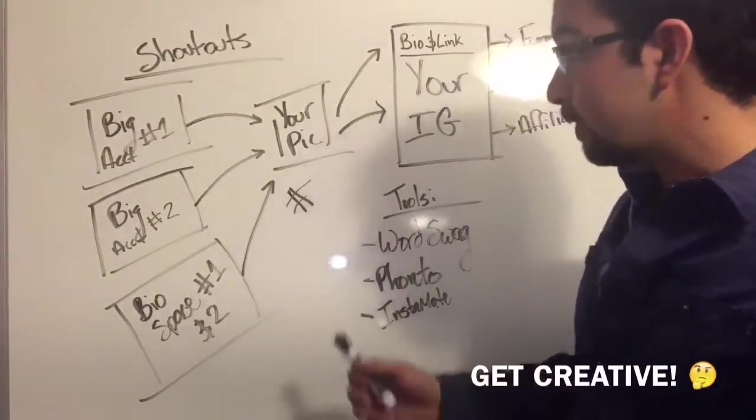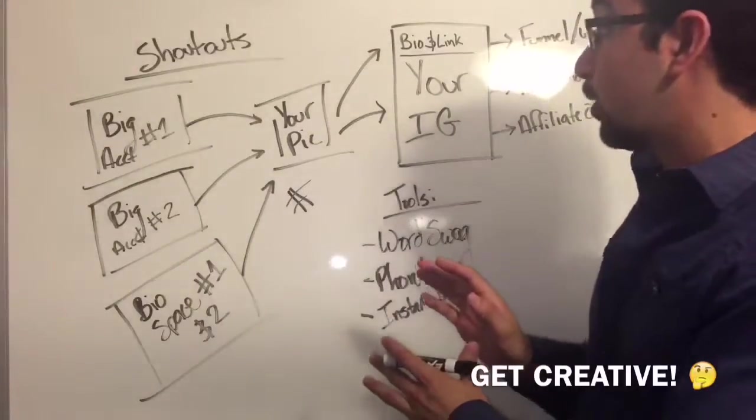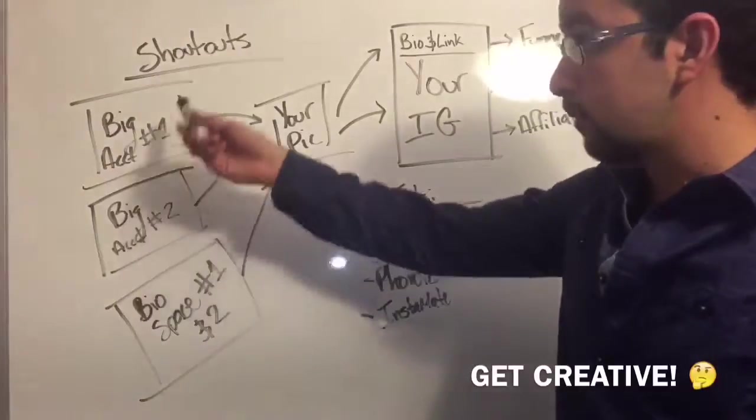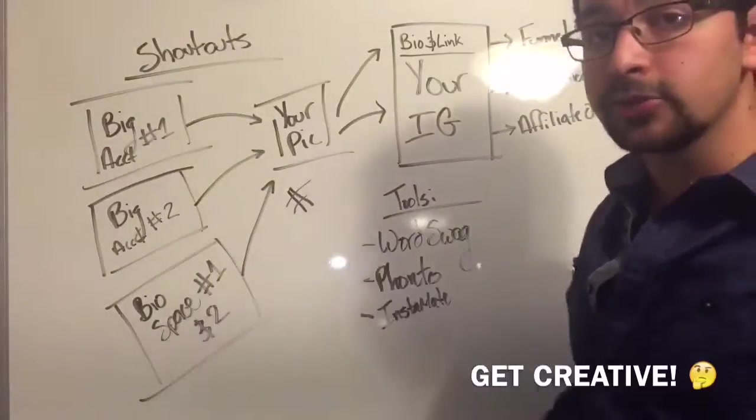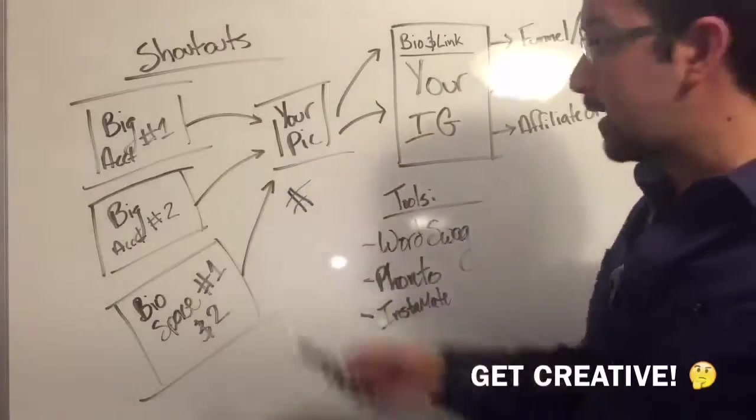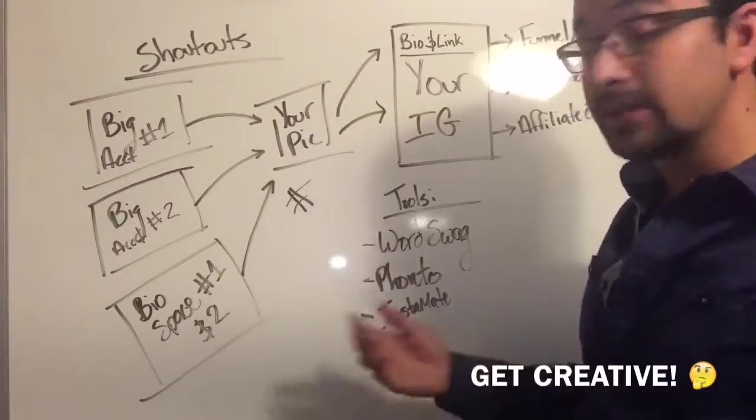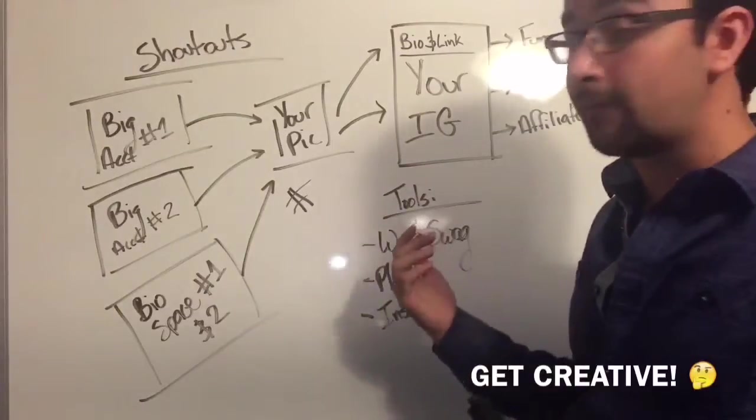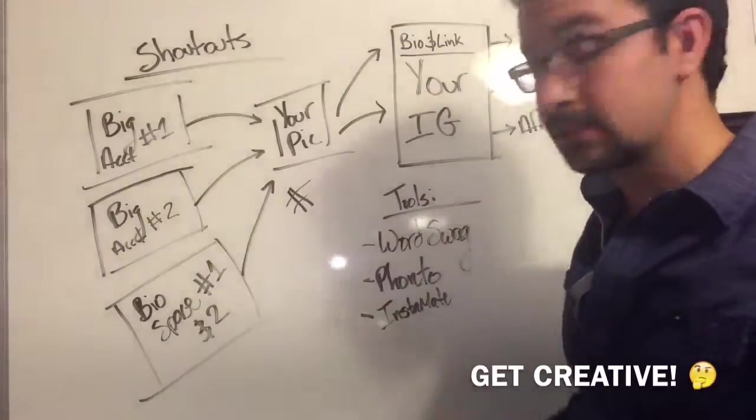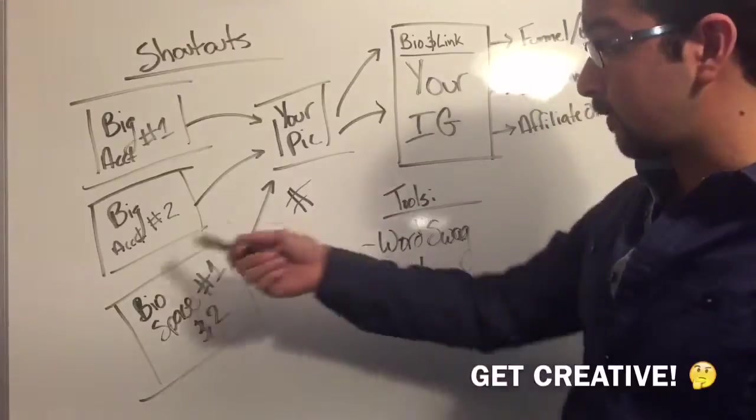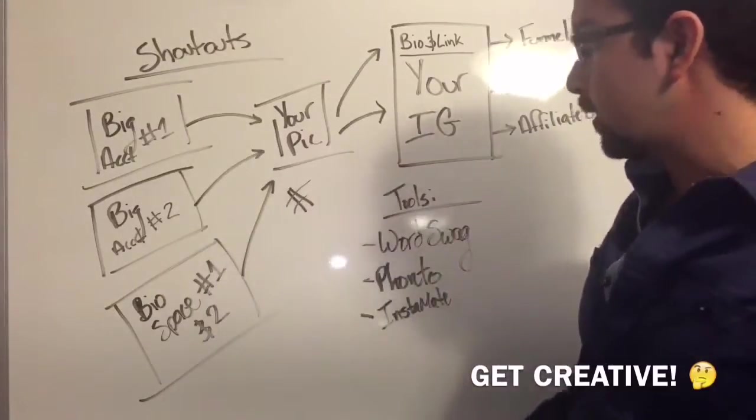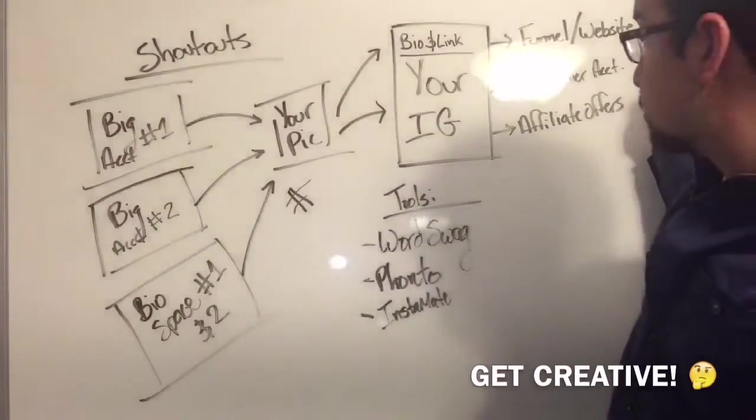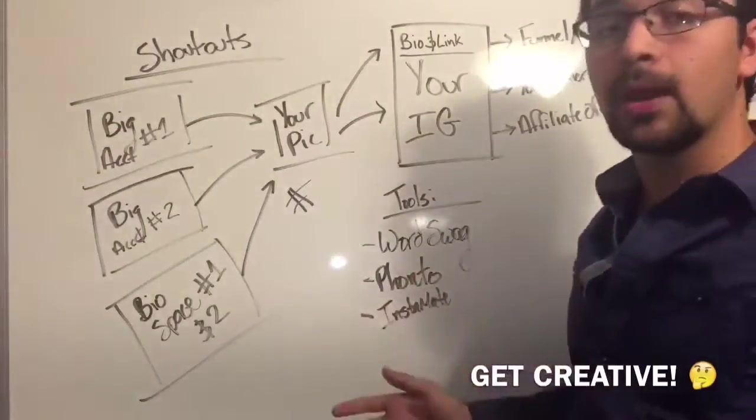So that's kind of just a quick seven minute hack to really being able to blow up your account. Get buy shout outs from other big accounts, rent out bio spaces from other accounts, tag people in your pictures, tag celebrities in your pictures. All it takes is one person with a million followers to like your picture. Next thing you might know, you have five, six, seven hundred likes, a thousand likes, two thousand likes on your picture. So this is a very powerful thing.